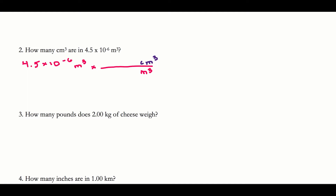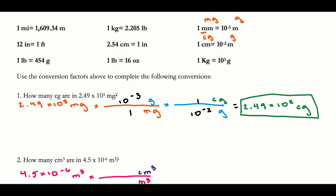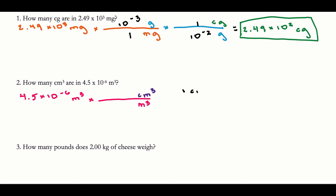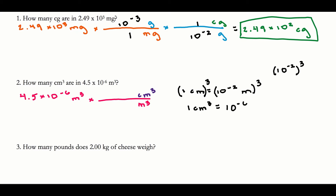The relationship I'm given is: one centimeter equals 10 to the negative second meters. Since I have centimeters cubed and meters cubed — not just centimeters and meters — I need to cube this relationship. One cubed is one, so one centimeter cubed equals 10 to the negative second cubed. When you raise an exponent to an exponent you multiply, so that's 10 to the negative 6, and the units are meters cubed.